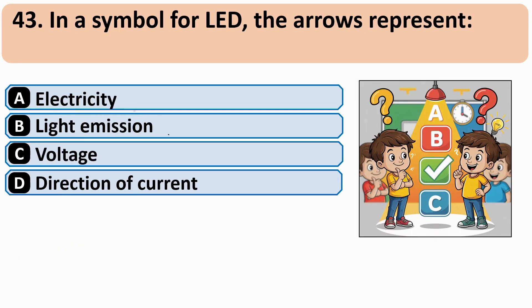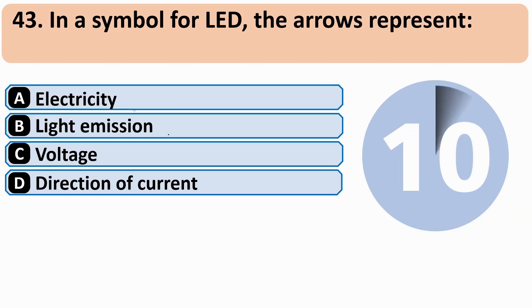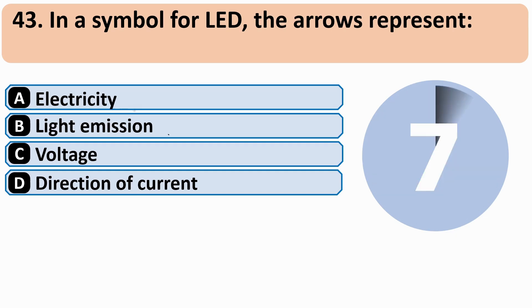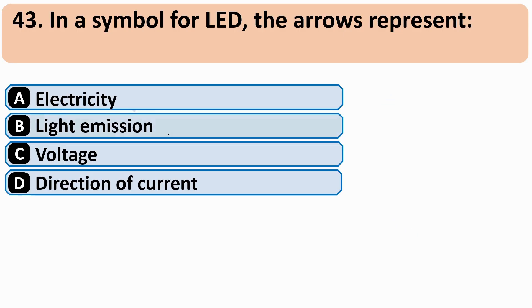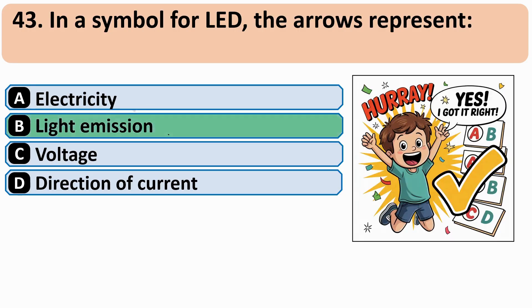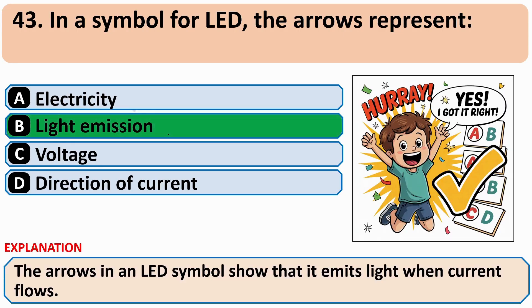In a symbol for LED, the arrow represents: the correct answer is B: Light emission.